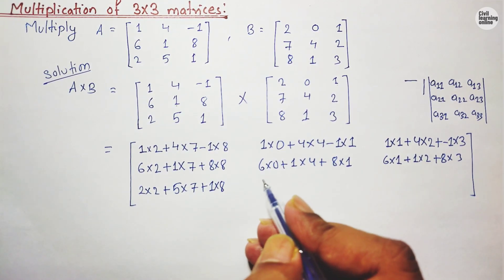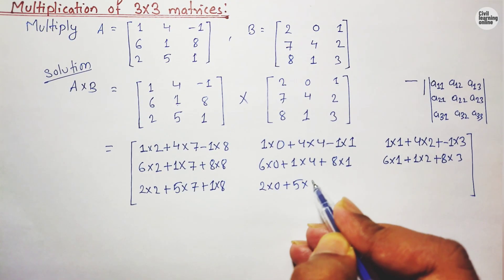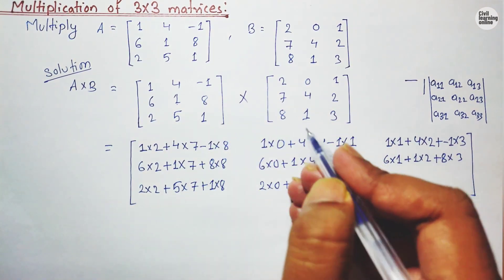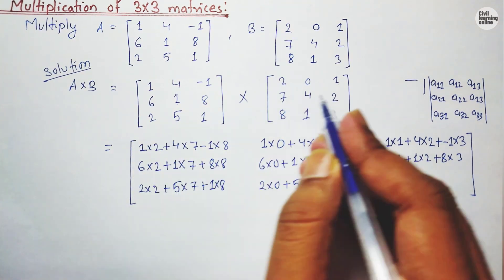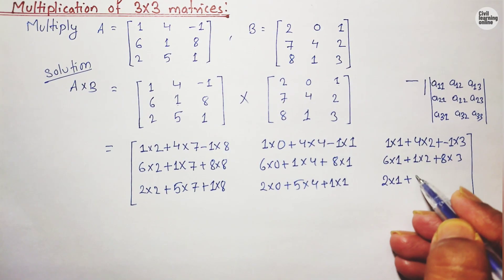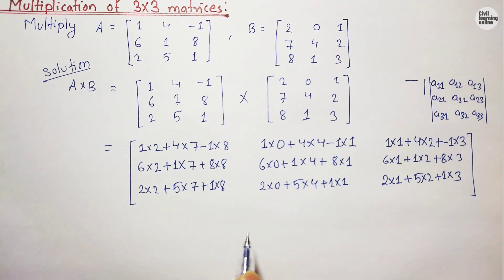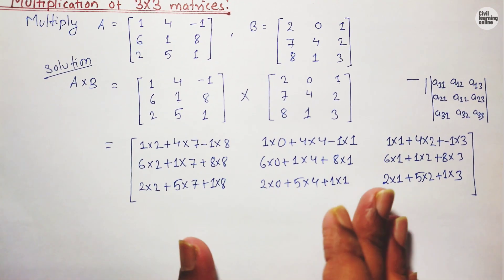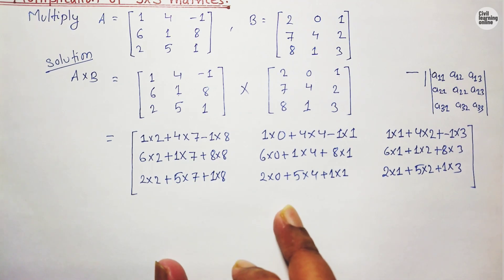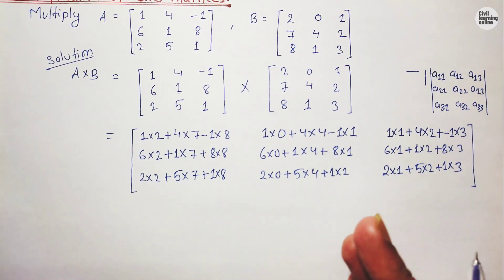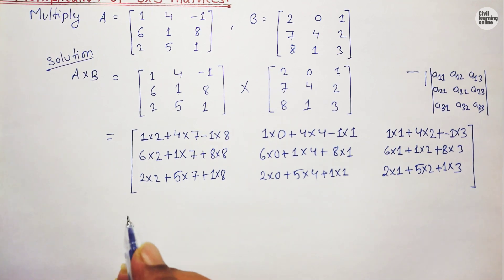Similarly, for element (3,2): 2×0 plus 5×4 plus 1×1. And for element (3,3): 2×1 plus 5×2 plus 1×3. This is how we do the multiplication. I hope you are understanding. If you are able to understand these steps then you will find it very easy when we discuss other methods related to matrices, and you will be able to solve any kind of multiplication.